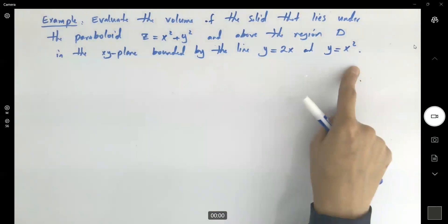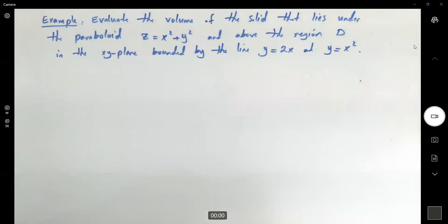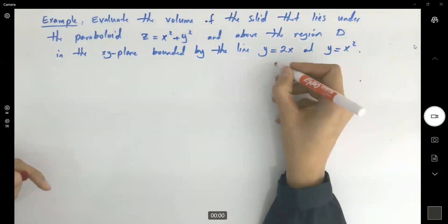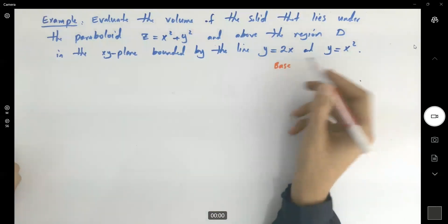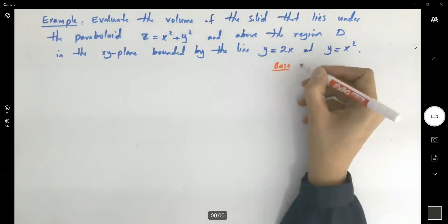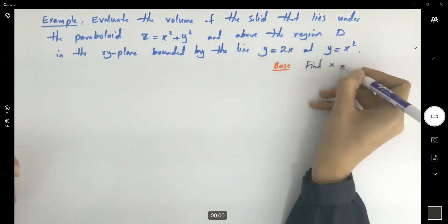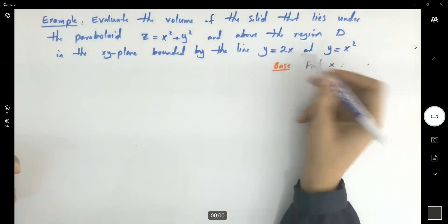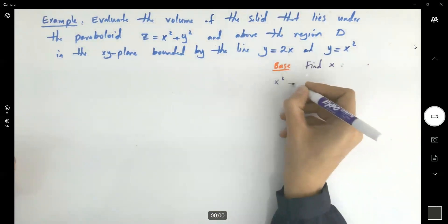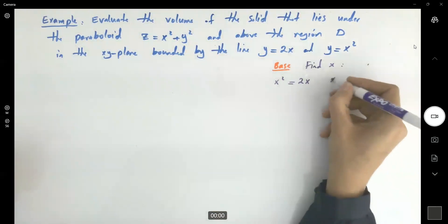We are interested in knowing what is the base. To find the base, we need to find the values for x. To find x, set these two equal to each other. You get x squared equals 2x, or x squared minus 2x equals 0.